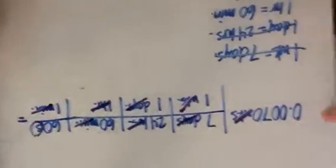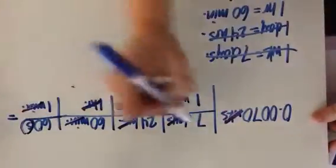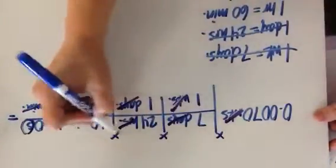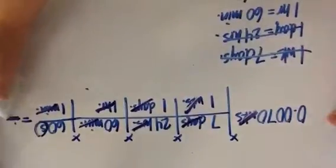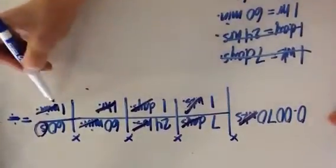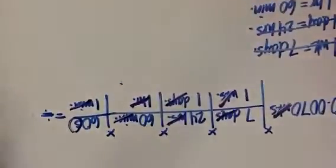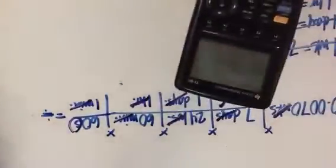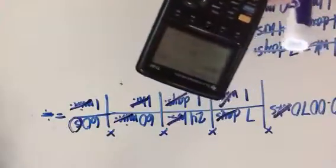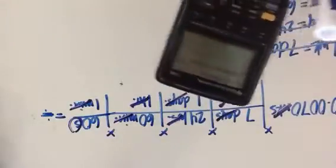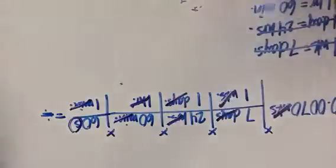Now I do the math. Everything on top, I multiply, and I divide by everything on the bottom, which is all ones, so I just multiply. 0.0070 times 7 times 24 times 60 times 60 equals.